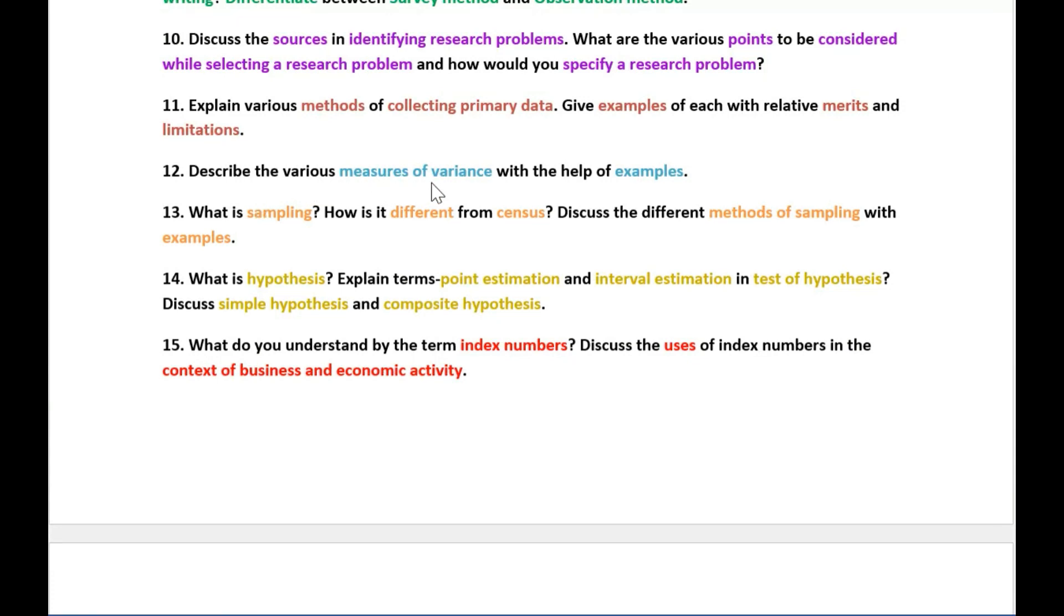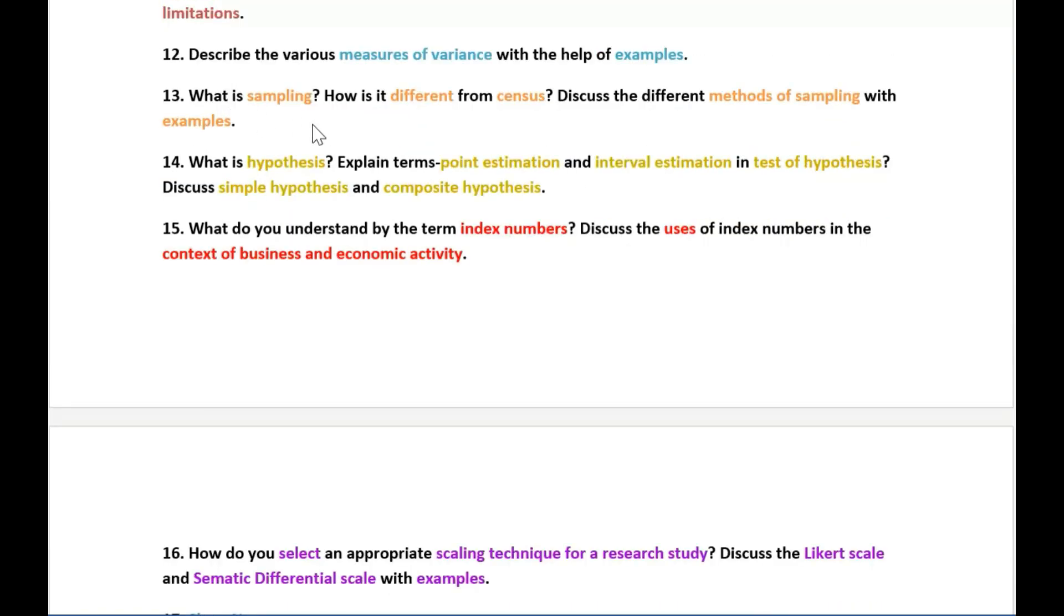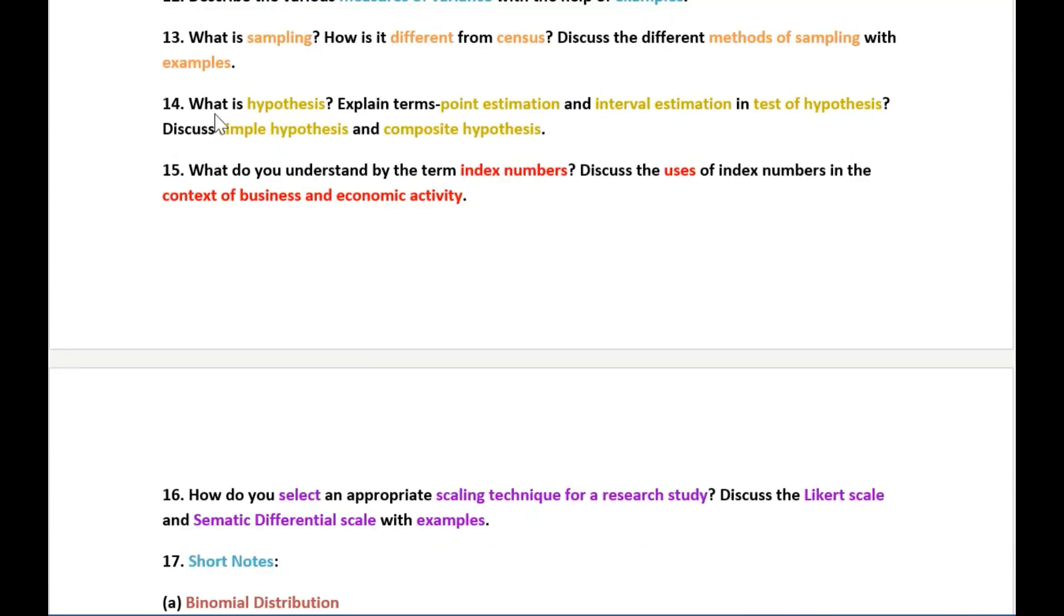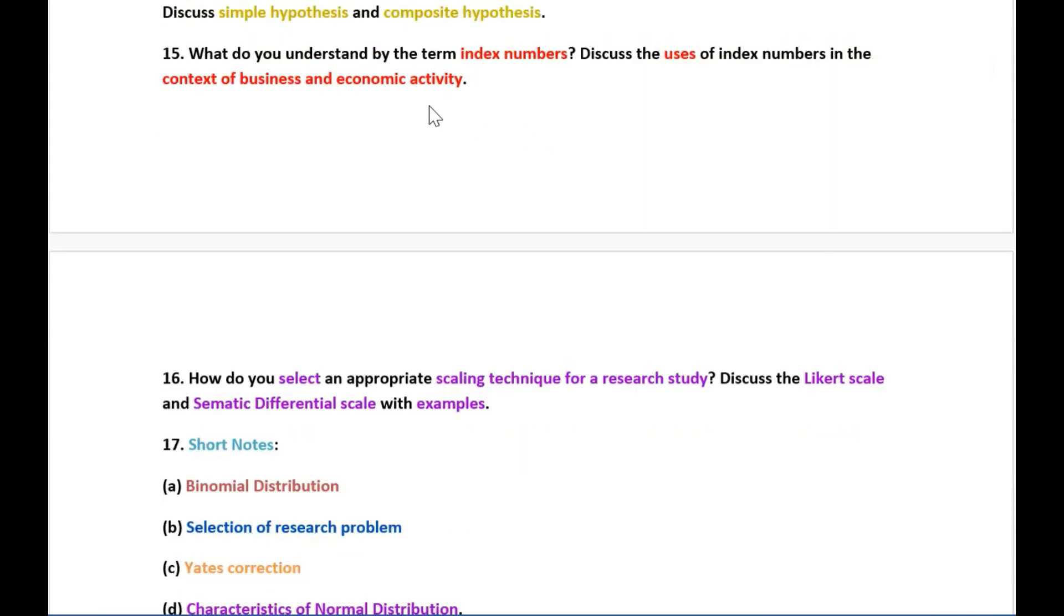The next question is on measures of variance, explain it with examples. The next question is on sampling and how is it different from census and what are the different methods of sampling, explain it with examples. The next question is on hypothesis and explain the terms point estimation and interval estimation in test of hypothesis and discuss the simple hypothesis and composite hypothesis. The next question is on index numbers and what are the uses of index numbers in the context of business and economic activity.